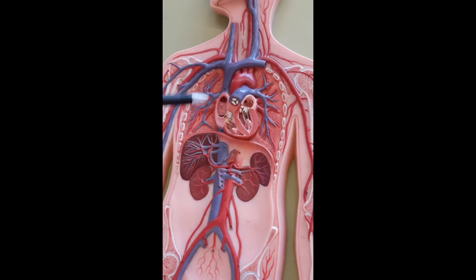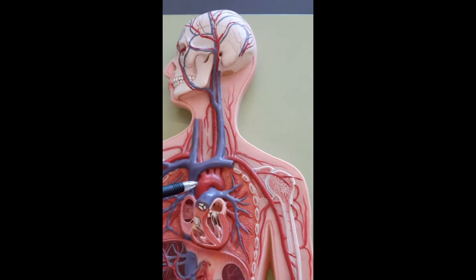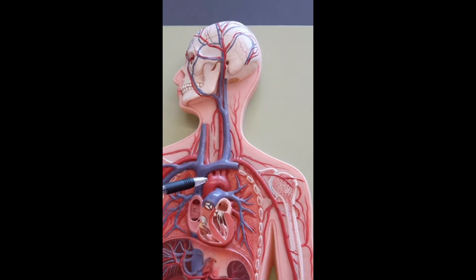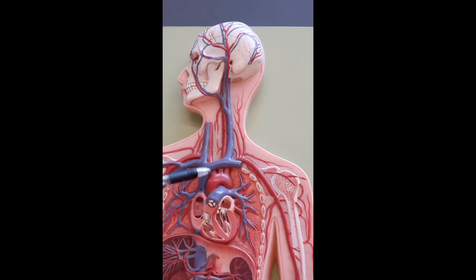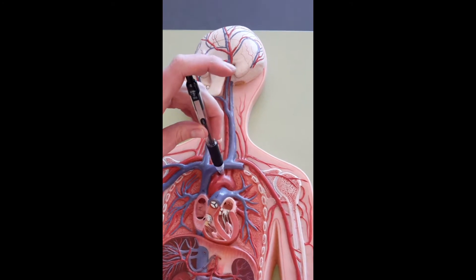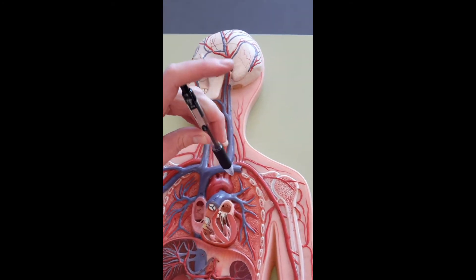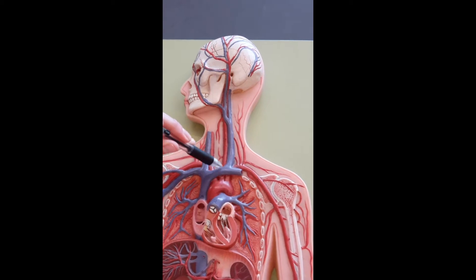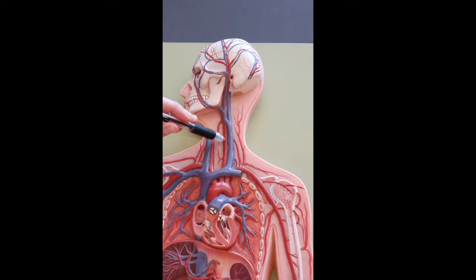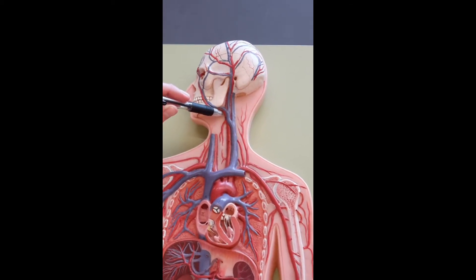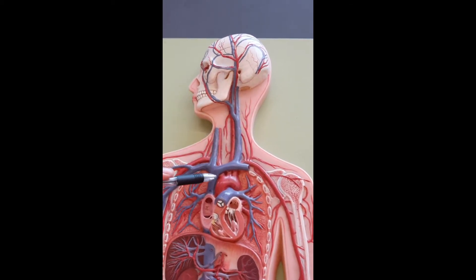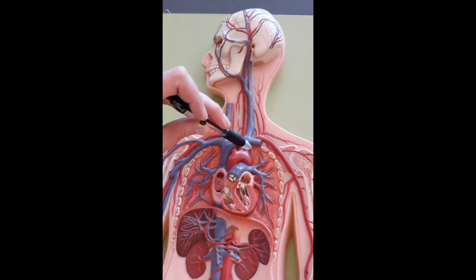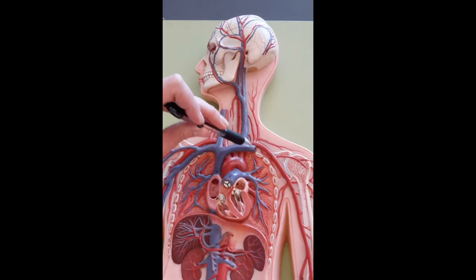If we look up here, coming off the aortic arch we have three branches: brachiocephalic, common carotid, and left subclavian. The common carotid continues up to supply the brain. The brachiocephalic comes over towards the right arm, and the left subclavian to the left.